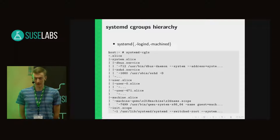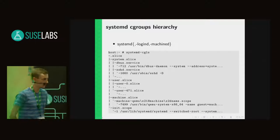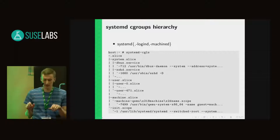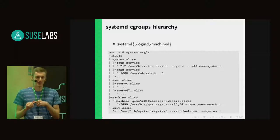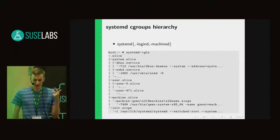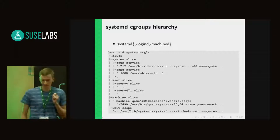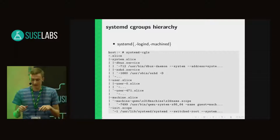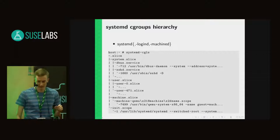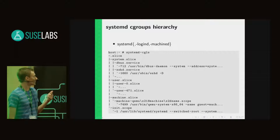Systemd maintains a hierarchy which you can see in readable form with the 'systemd-cgls' utility. The hierarchy in systemd terms consists of inner nodes — so-called slice units — and leaf nodes, which are scopes and services. On the top level there are three important slices: the system slice, the user slice, and the machine slice. The init scope is just for PID1 itself. Each of these top-level hierarchies is controlled by one of the systemd daemons: system slice is maintained by PID1, user slice is controlled by logind, and machine slice is controlled by machined.